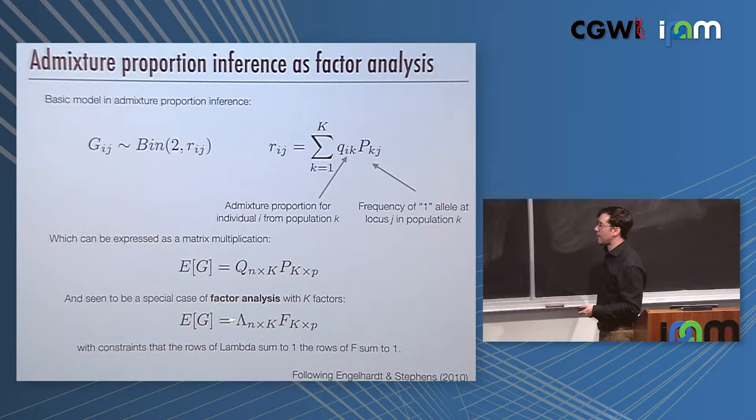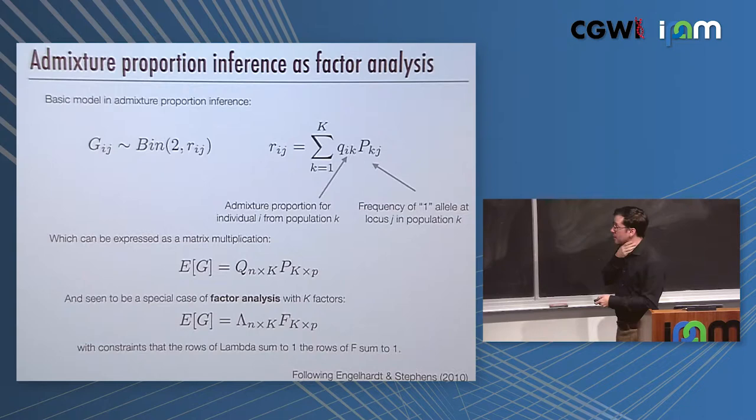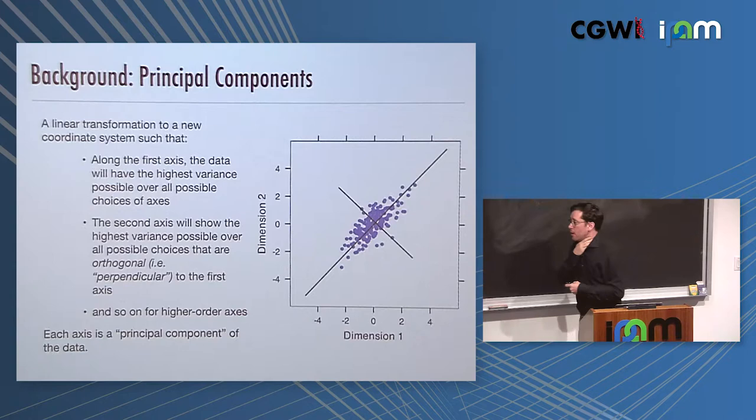This can be seen as a special case of factor analysis with K factors. The idea of factor analysis is that you're taking the genotype matrix and expressing it as the product of two matrices, one that's N by K and one that's K by P. But it's factor analysis with specific constraints: the rows of lambda sum to one because they're ancestry proportions, and the rows of F, the allele frequencies, they have to sum to one. This interpretation is laid out in a paper by Engelhardt and Stephens in 2010.